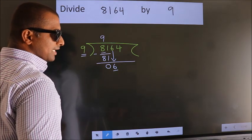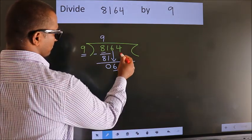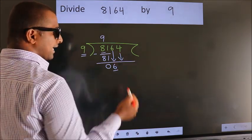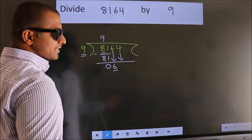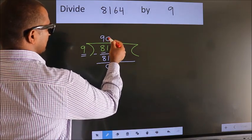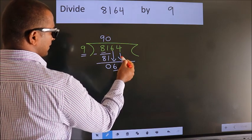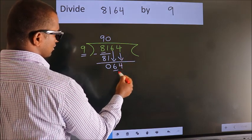So we should bring down the second number. And the rule to bring down the second number is, put 0 here. Then only we can bring down this number. So, 64.